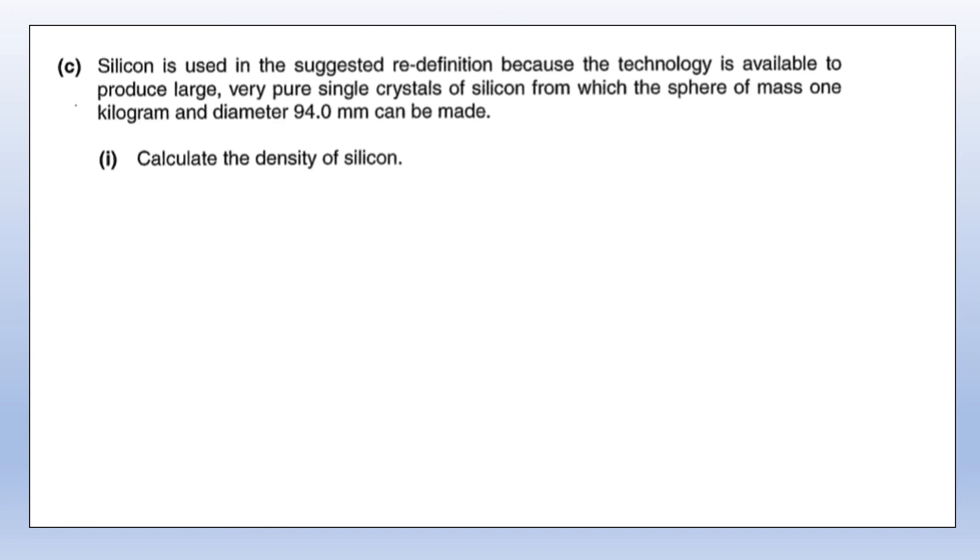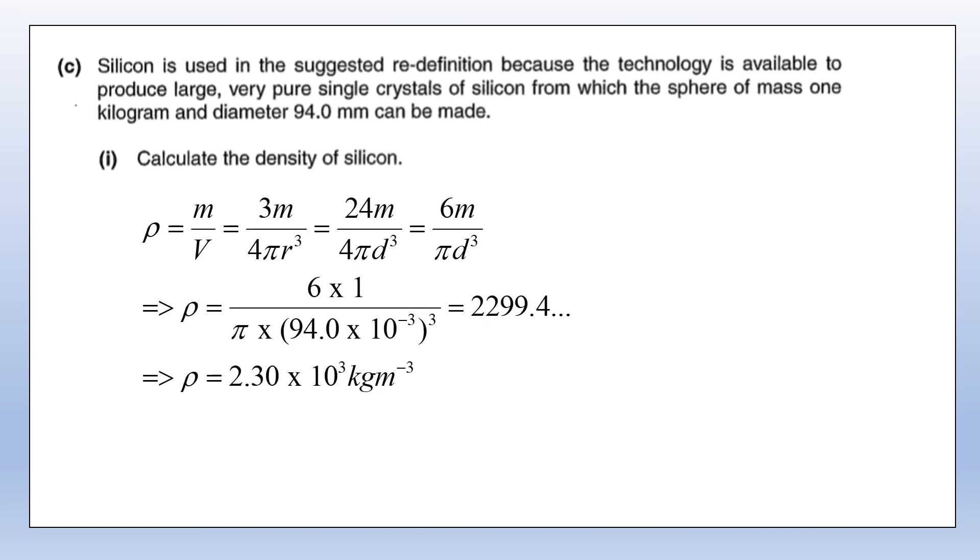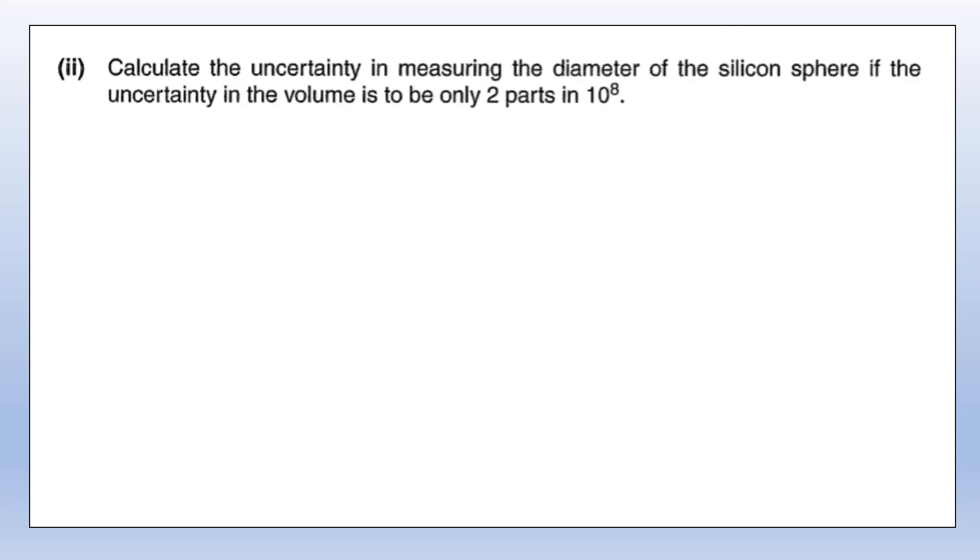We can produce a very pure silicon crystal. If we've got one kilogram and we know the diameter, we can get an idea of the density. We've got a diameter of 94 millimeters and the mass is one kilogram. We're going to do mass divided by volume to give us the density. Volume of a sphere is 4/3 π r³, diameter is twice the radius. Then we put the numbers in, remember to convert millimeters to meters, and we get a value of 2299.4. The values we're using are essentially to 3 significant figures from the diameter, so I'm going to give my answer to 3 s.f. as well.